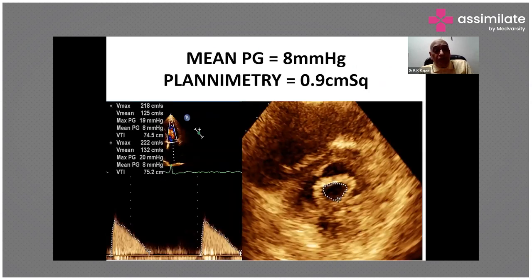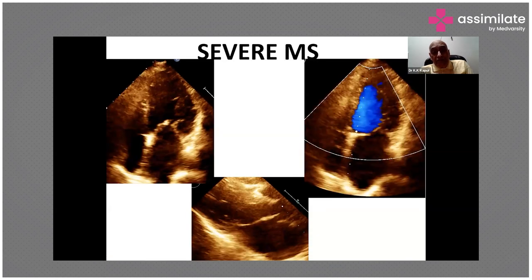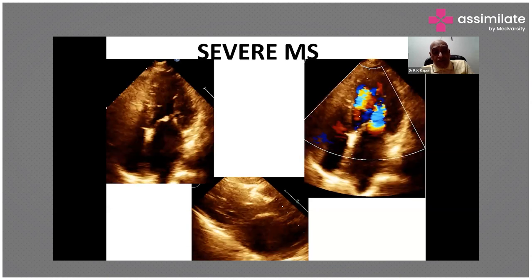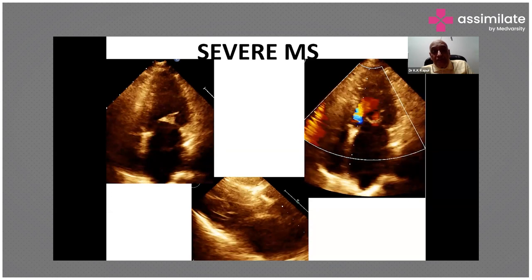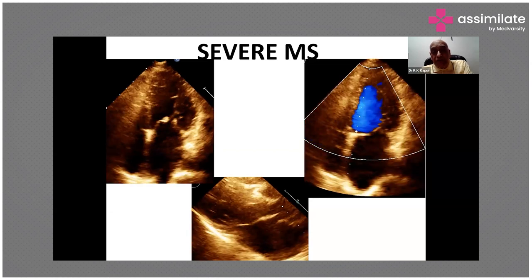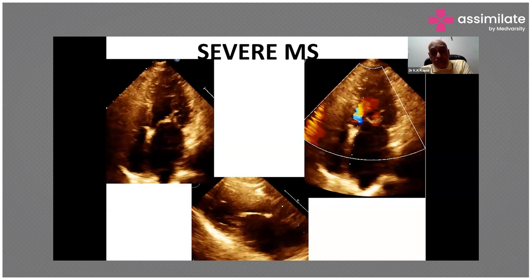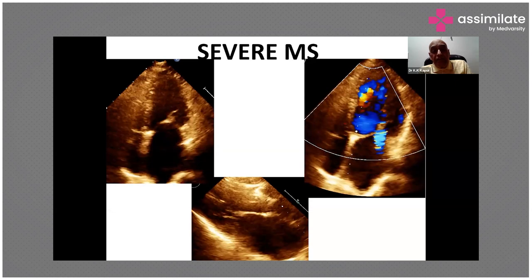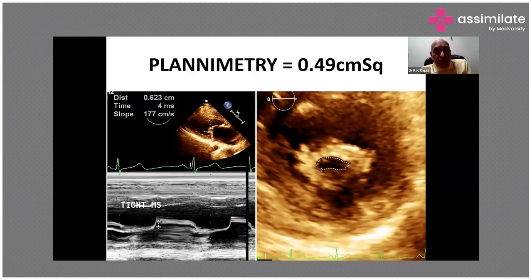A continuous wave Doppler example shows peak gradient of 19 mmHg and mean gradient of 8 mmHg, with planimetry mitral valve area of 0.9 cm² — a tight mitral stenosis. Another case of rheumatic disease shows tight mitral stenosis with aortic and mitral vegetations, and planimetry of 0.49 cm² confirming very tight stenosis. 3D echo correlates better with cardiac catheterization than 2D, but 2D is still highly accurate.